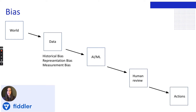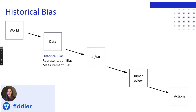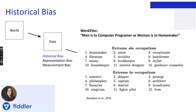Historical bias is the already existing bias in the world that has seeped into our data. This bias can occur even given perfect sampling environments and feature selection, and will most often show up for groups that have been historically disadvantaged or excluded from certain activities. An example can be found in Google's text embedding models, which led to gendered occupation results like the analogy: man is to computer programmer as woman is to homemaker. These results were only a reflection of the existing gender bias in our language.